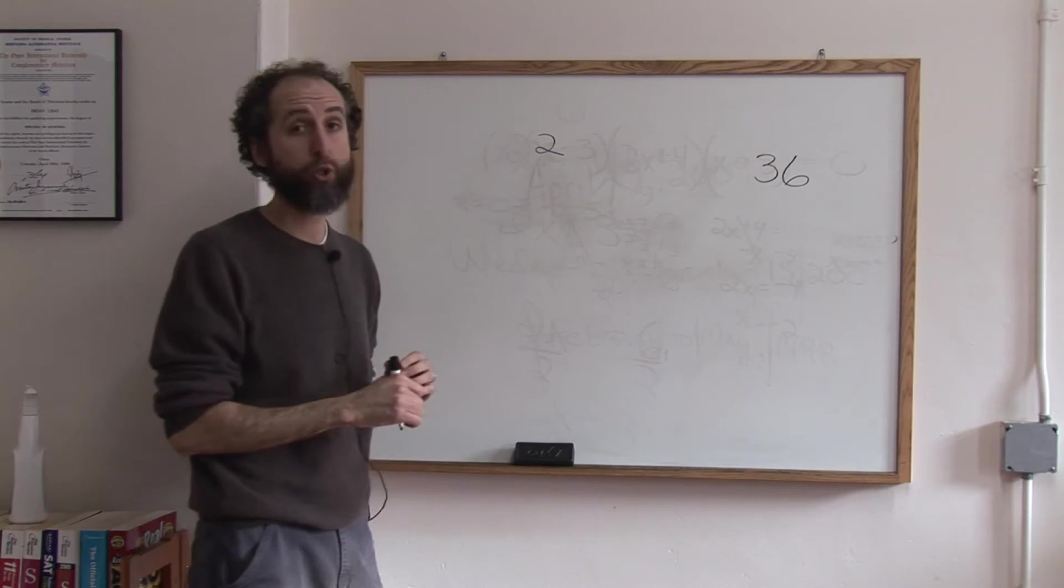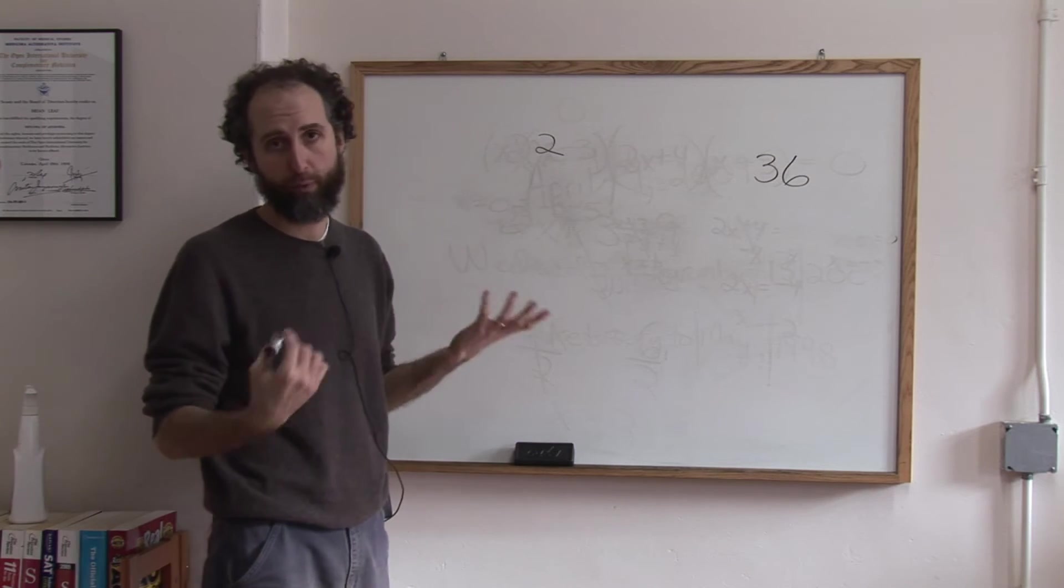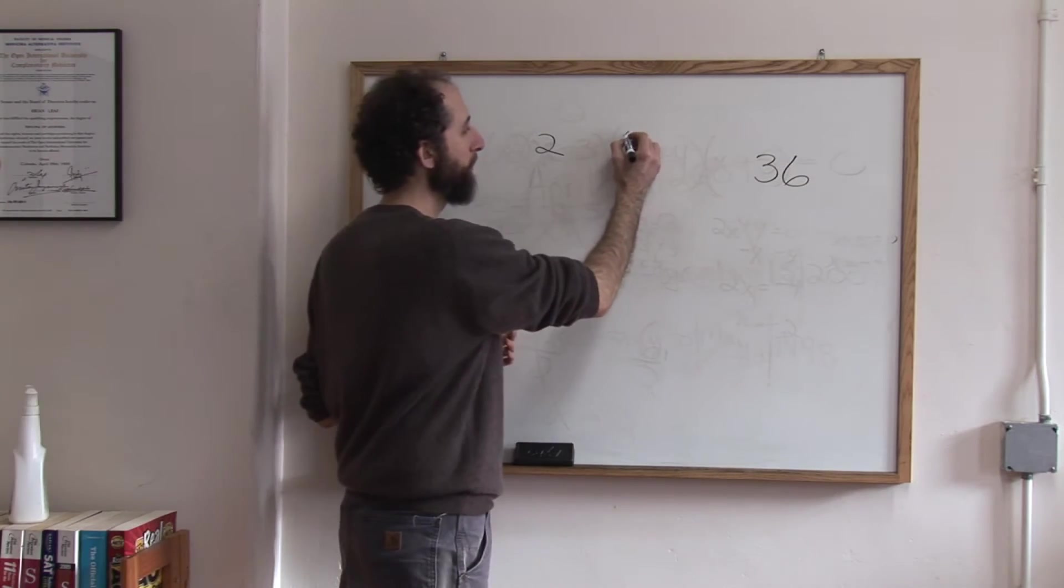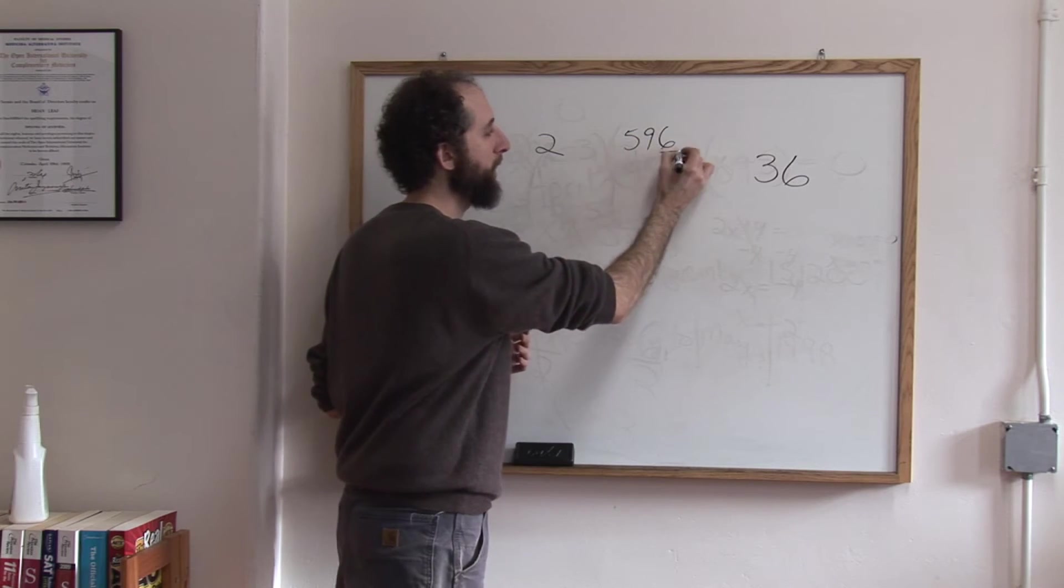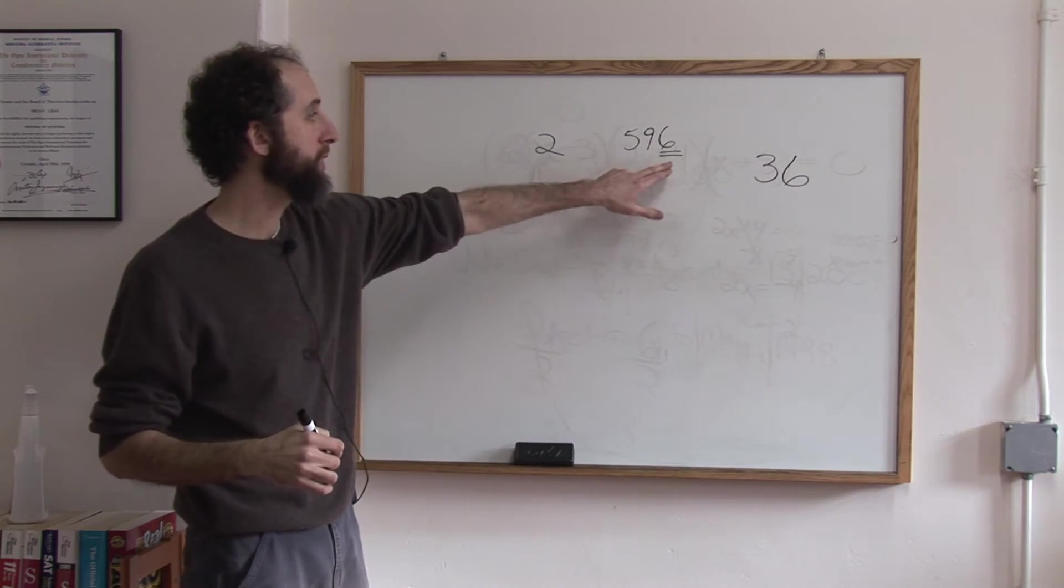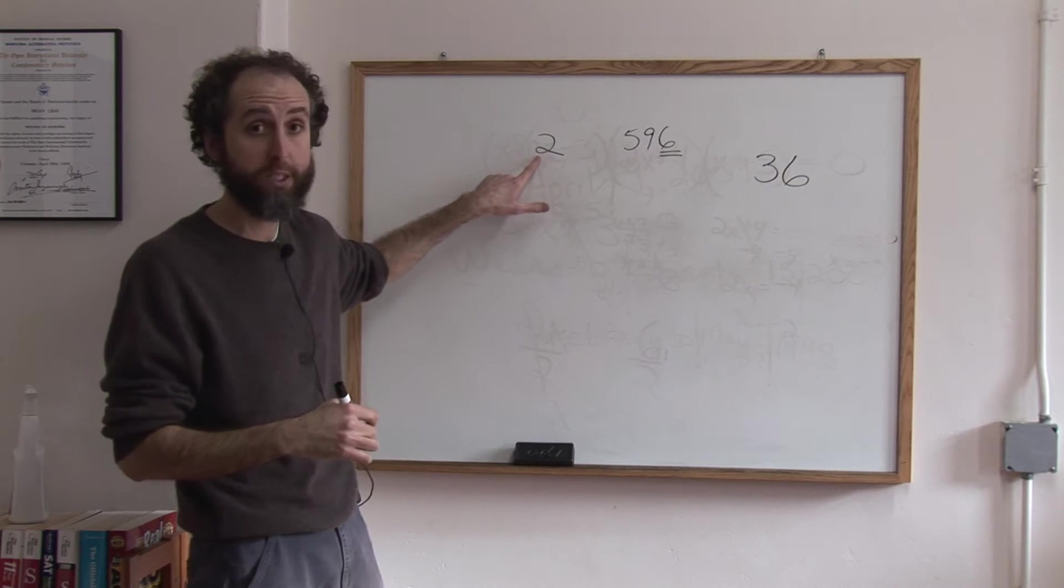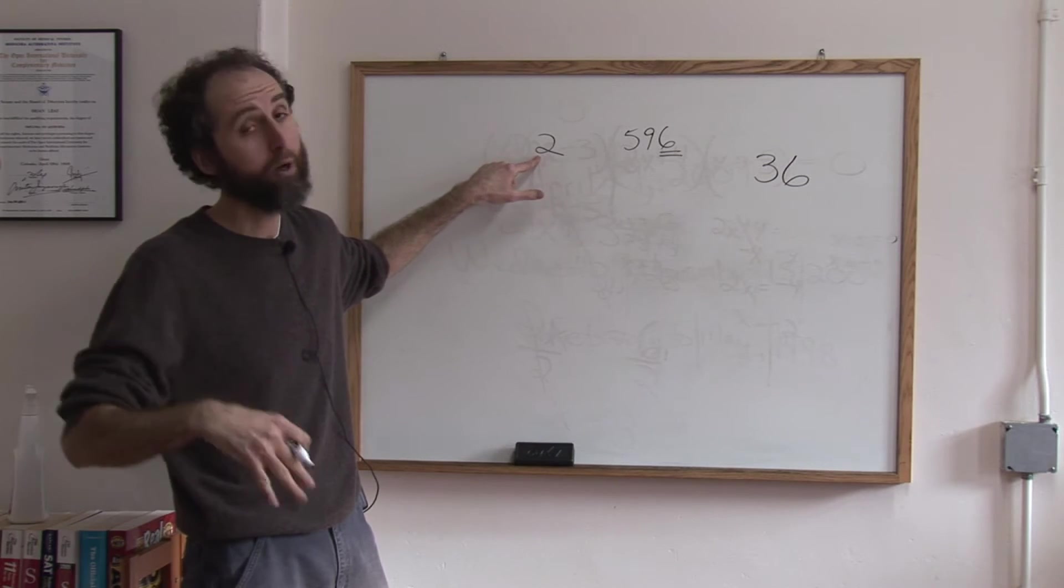Okay, if the number 2 goes into a number, the number will be even and it will end in an even number. Any number that ends in an even number is going to be divisible by 2. So it'll have 2 as a factor. It wouldn't be prime.